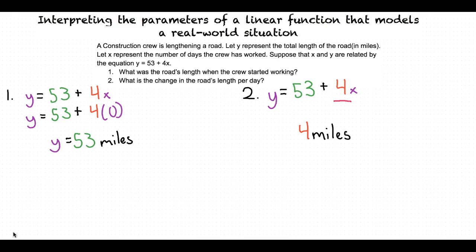So basically, when looking at the word problem, when the question asks for the starting point, we let x equal zero in our equation. When the question is asking for the change, then we would write down the slope as our answer. Now you're getting it.